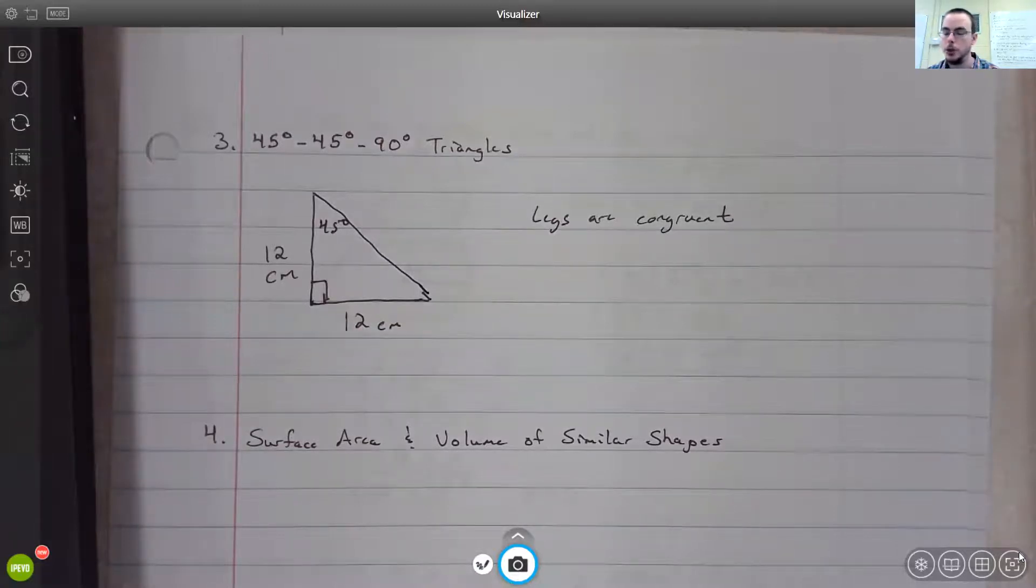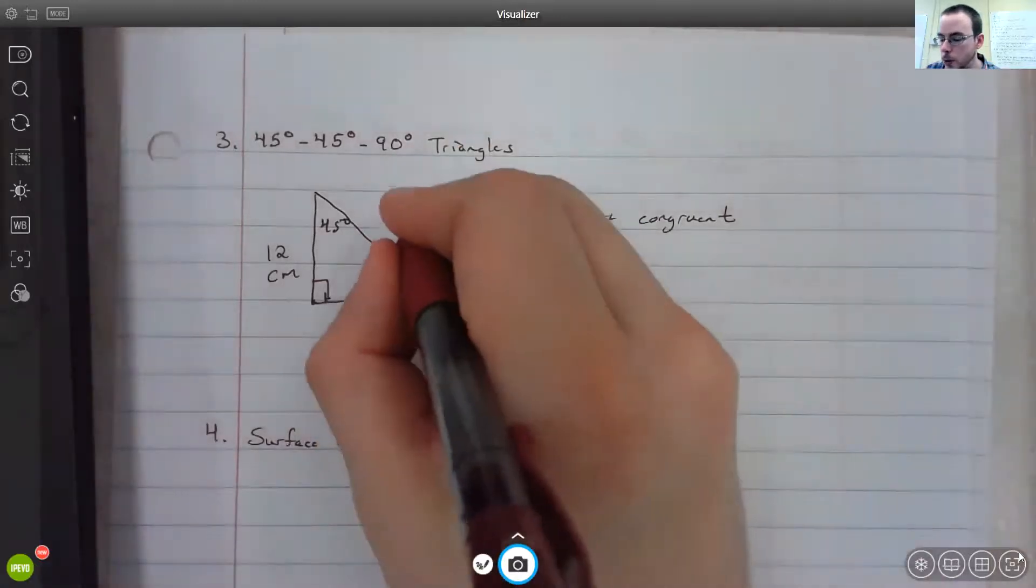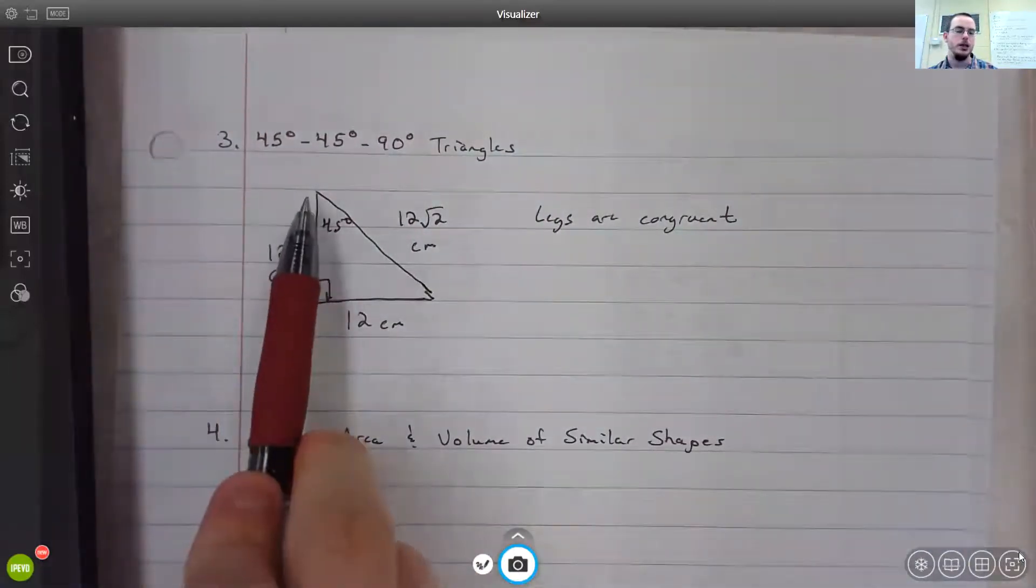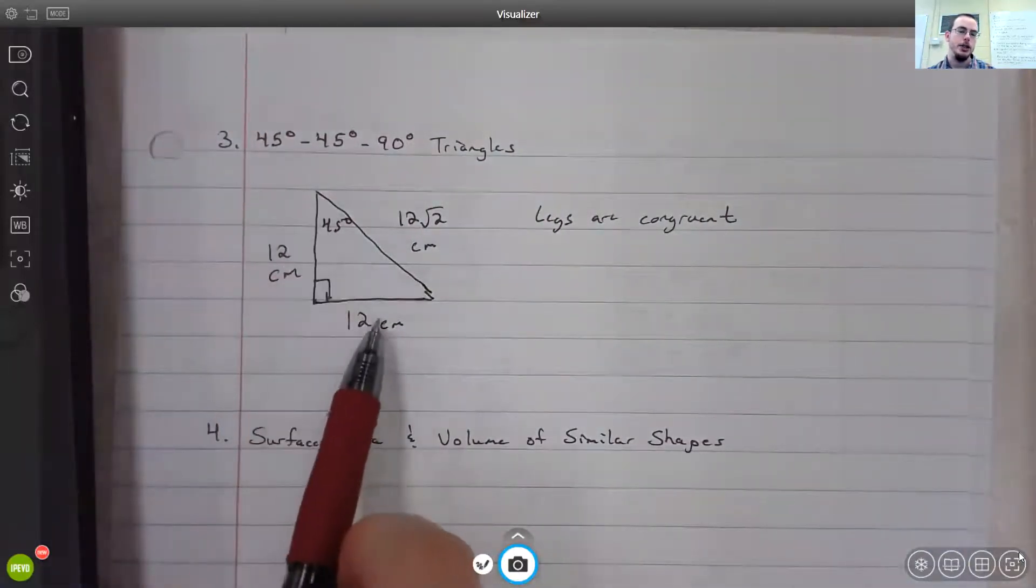If you say that your leg on the left here is equal to 12 centimeters, then the bottom leg will be exactly the same, it will be 12 centimeters as well. Then of course, there is the rule where you can multiply those by root 2 to get your hypotenuse. So your hypotenuse will be 12 root 2 centimeters. But most of the time, you're just interested in what the legs are if you're combining that with 3D shapes.